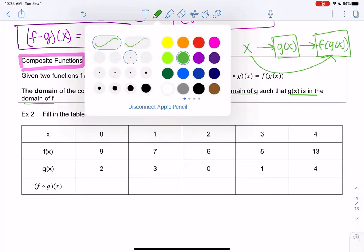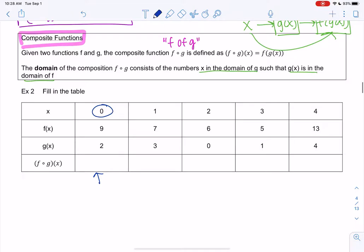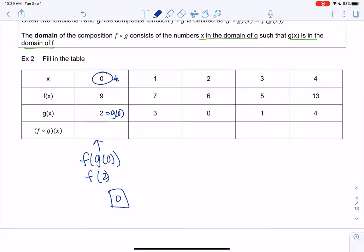So let's do one table version and then we'll look at actual equations. So f of g of x. We're going to fill in the table. So this first one is saying f of g of 0. This is my x value. So I'm going to go to the table and I'm going to find g of 0. So I go to 0 and I find the g value.